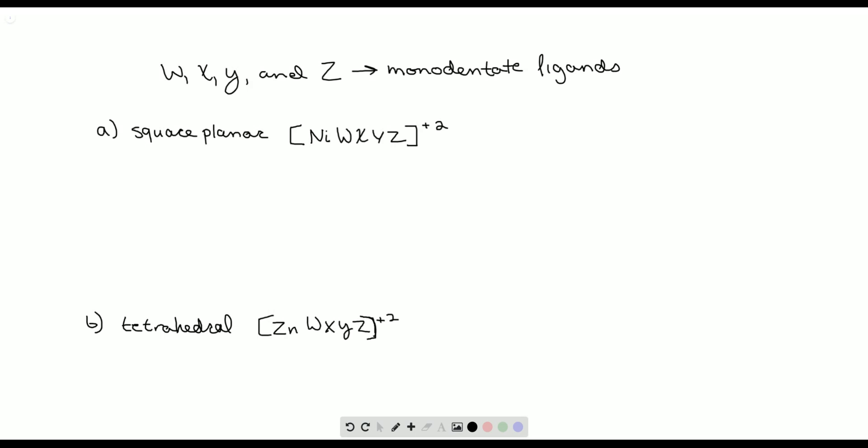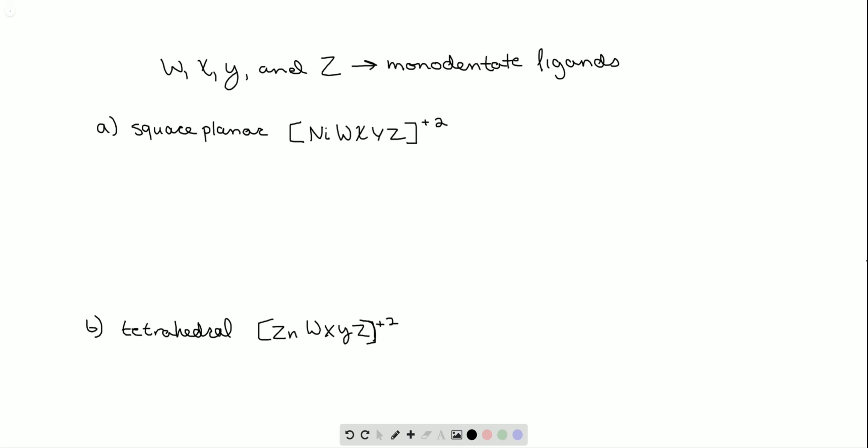And so this question really depends on your understanding of the different complex types. Geometric isomers cannot exist with tetrahedral compounds, even though they can with square planar compounds.